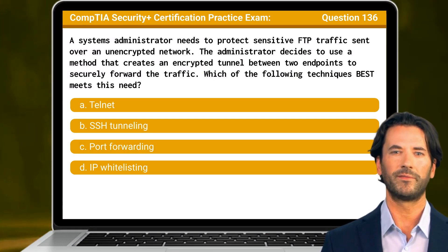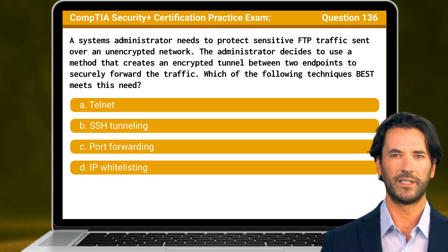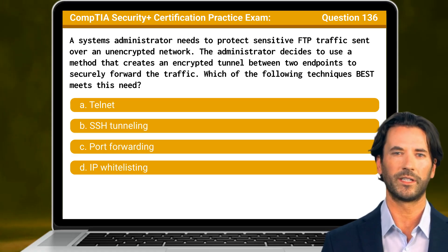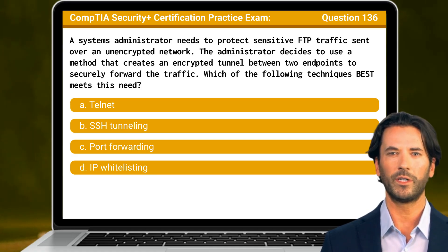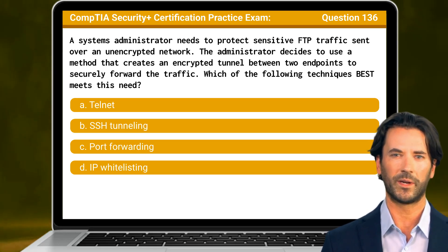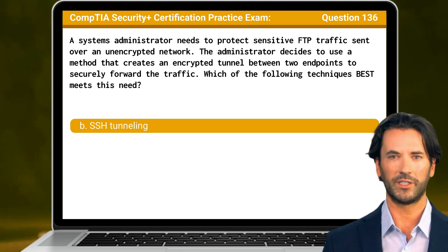Question 136. A systems administrator needs to protect sensitive FTP traffic sent over an unencrypted network. The administrator decides to use a method that creates an encrypted tunnel between two endpoints to securely forward the traffic. Which of the following techniques best meets this need? The answer is B: SSH tunneling.